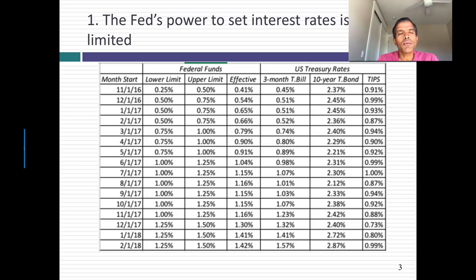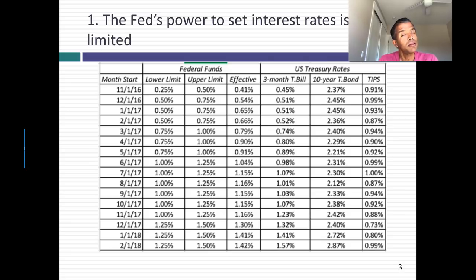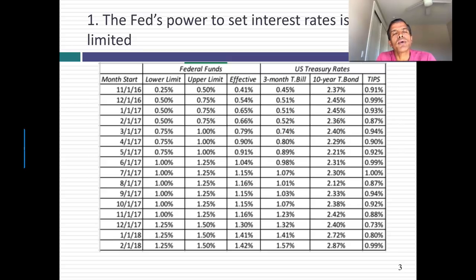When you think about interest rates, you often think about central banks — in the US, you often think about the Fed. At the start of this week, Jerome Powell, Chairman of the Fed, was in front of Congress talking about the economy. But the Fed's power to set interest rates is limited. The only interest rate the Fed actually sets is the Fed funds rate — a rate at which none of us ever borrow. It's an interbank overnight borrowing rate.